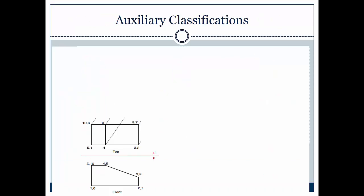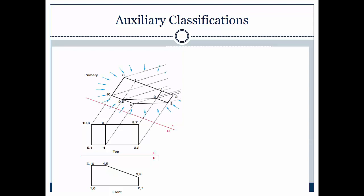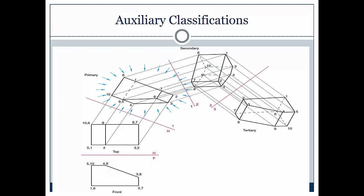Auxiliary classifications. When we are looking at the front and the top view, we can have what we call a primary auxiliary view. This is a single view projected from one of the six principal views. A secondary auxiliary view is a single view projected from a primary auxiliary view. And likewise, a tertiary auxiliary view is a single view projected from a secondary or another tertiary auxiliary view.